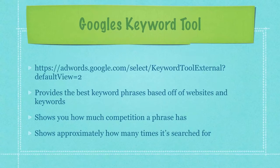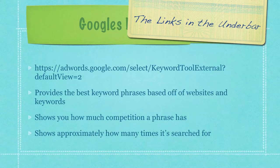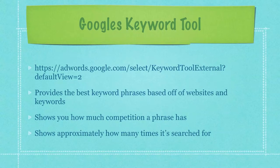How I do that is I use Google's Keyword Tool. You can see it here — it's adwords.google.com. Select Keyword Tool External, and you can pause the screen if you want to write that down. Otherwise, I also have a link to it, along with all the other tools, in the description bar. What this tool does is it provides the best keyword phrases based off of either websites or keyword phrases that you enter. It automatically will look at what you entered and try to find better keywords and keyword phrases. Or, if you put a website in, it's going to show you the best keyword phrases for that specific website.